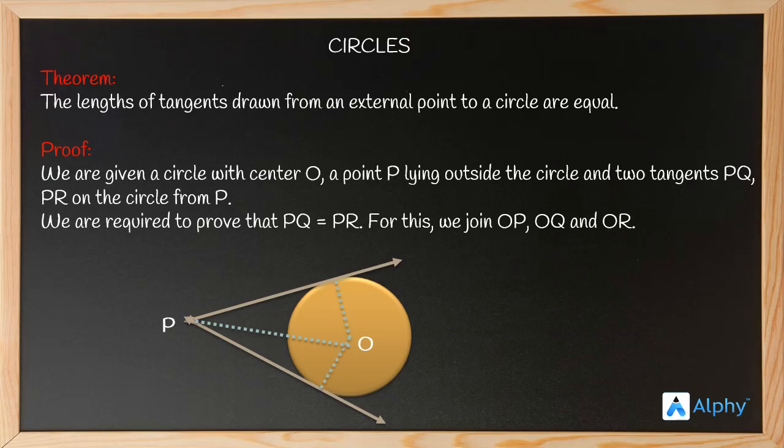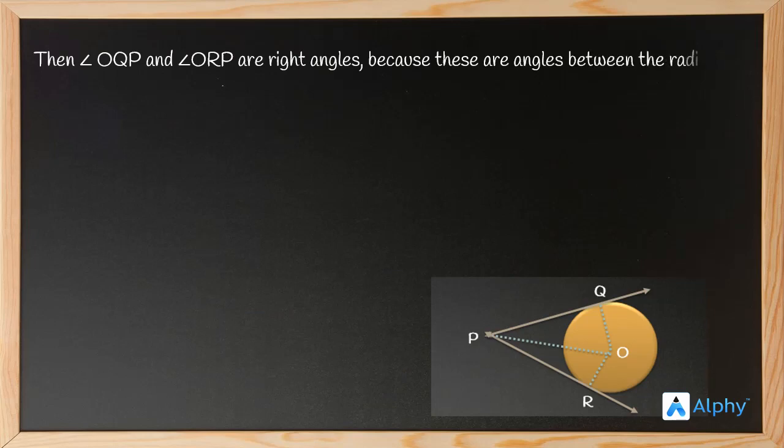to the points of contact Q and R. Then angle OQP and angle ORP are right angles, because these are angles between the radii and tangents.